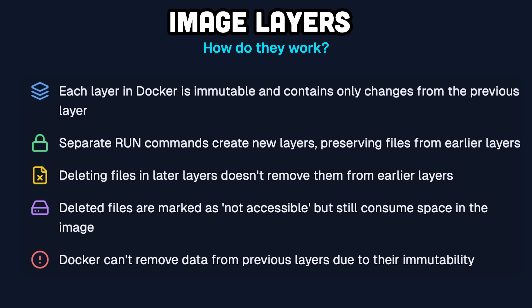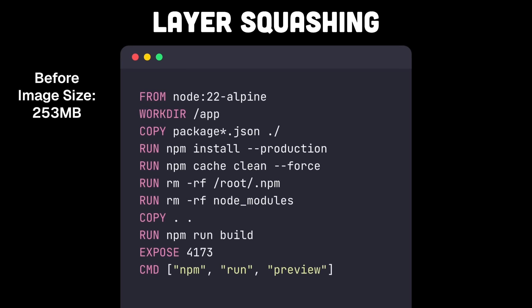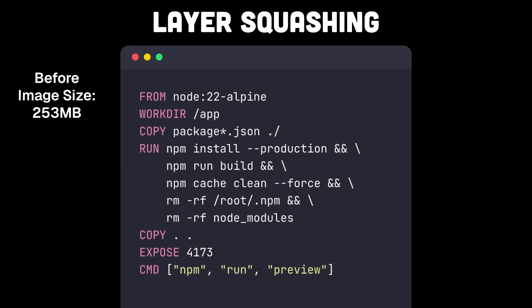The deletion in a new layer only marks the files as not accessible in the final container, but they still consume space in that image. If we move all of these into one run command though, all of these operations are now happening in a single layer. When that layer is committed, it only contains the final state with the cleaned up files, not any of that intermediate state with the extra files. This could even have security implications if you're copying over .env files — which you shouldn't be doing, by the way. But if you did and then removed it on another line, it would actually still be findable in the image. Someone could go in there and extract those secret files.